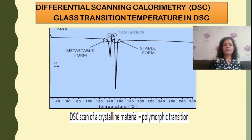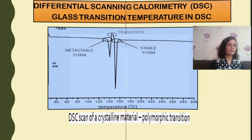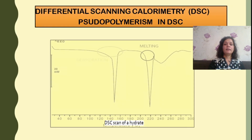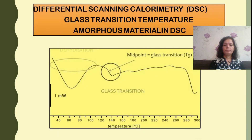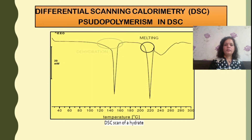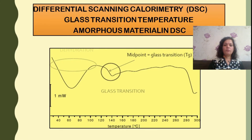By utilizing DSC, the glass transition temperature and polymorphic transitions of materials can be studied — including the metastable form, stable form, and transition form of crystalline polymorphic material. Pseudo-polymorphism can also be detected using DSC; for example, a hydrate sample can reveal the dehydration point and the melting point of a particular compound. For amorphous materials, the glass transition temperature can also be found using DSC.